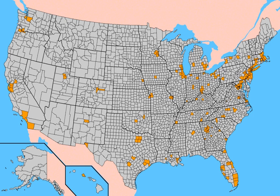Opponents of the electoral college argue that it can result in a person becoming president even though an opponent got more votes, which has happened in two out of the last five presidential elections; that it causes candidates to focus their campaigning disproportionately in a few swing states while ignoring most areas of the country; and that its allocation of electoral college votes gives citizens in less populated rural states as much as four times the voting power as those in more populous urban states. Polls since 1967 have shown that a majority of Americans favor the president and vice president being elected by the nationwide popular vote, instead of by the electoral college.